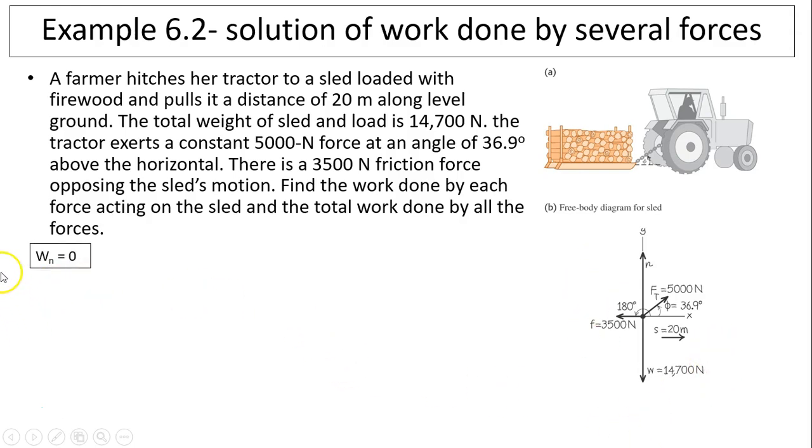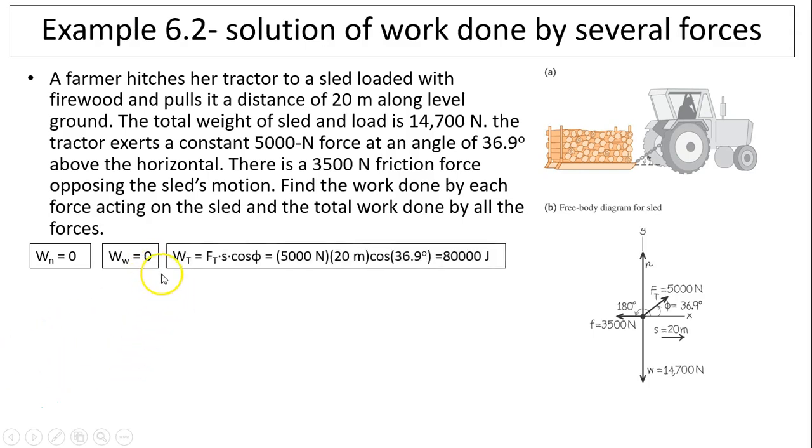We'll find work done by each force. The normal force equals zero because normal force is perpendicular to displacement. The work done by the weight is also zero for the same reason. Work done by tension is F_t times displacement times cosine phi. Straightforward: 5,000 times 20 times cosine 36.9, you'll have 80,000 joules.